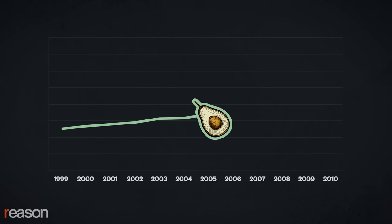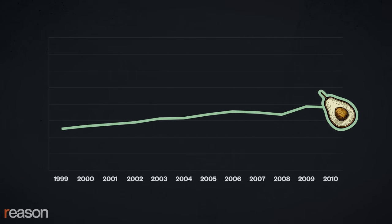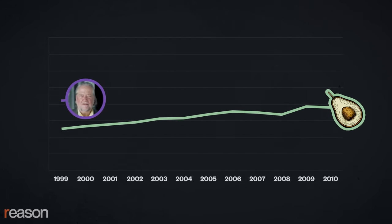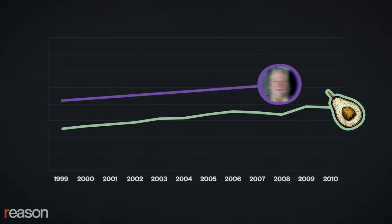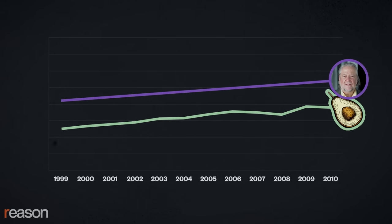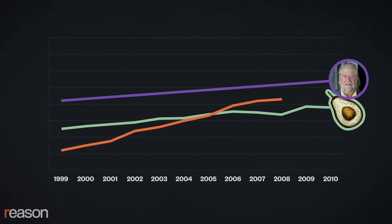Global avocado production also climbed in these years. My age also went up. Does that mean avocado production or my age might have something to do with the increase in overdose deaths? No. While it's at least plausible that an increase in opioid prescriptions led to an increase in overdoses, you can't determine that simply by noting parallel increases.